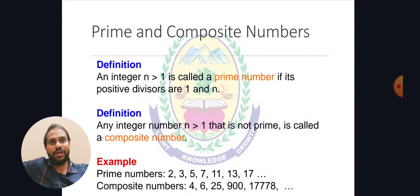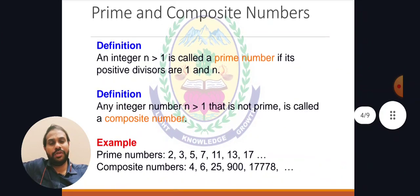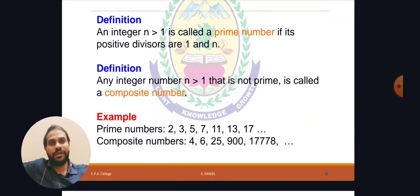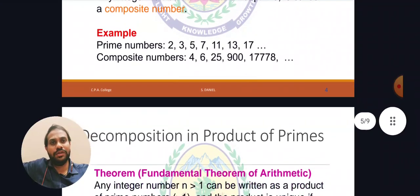Prime and composite numbers: for any integer n greater than 1, n is called a prime number if its only positive divisors are 1 and n itself. Numbers divisible only by 1 and themselves are prime numbers. Any integer n greater than 1 that is not prime is called a composite number. For example, prime numbers are 2, 3, 5, 7, 11, 13, 17, and so on. Composite numbers include 4, 6, 25, 900, and so on.